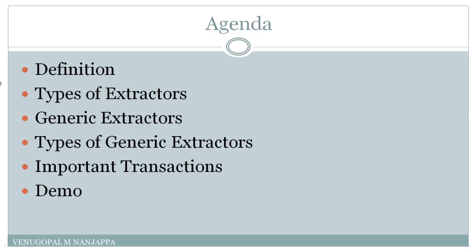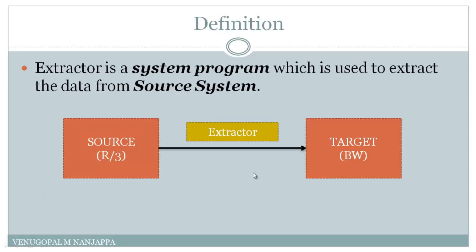This is the definition of extractor. The extractor is a system-generated program which is used to extract data from a source system. As we see in the diagram, we have source as SAP R3 system and target as SAP BW system. In order to take data from SAP R3 and transfer to BW system, we need a system program — that is called an extractor.